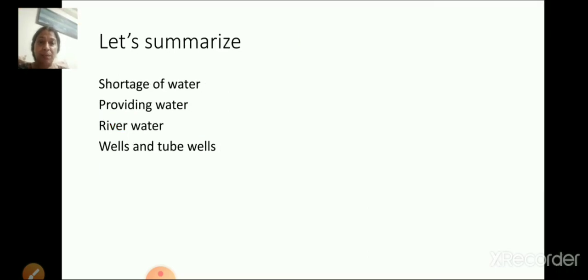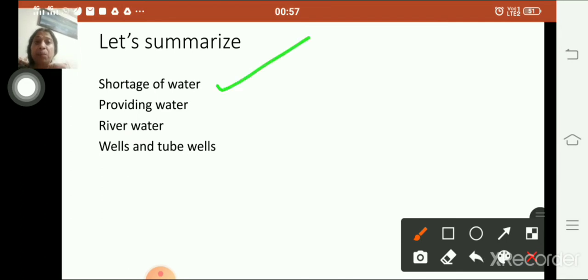So let's summarize what we have learnt today. Today, we have learnt shortage of water. So in spite of being surrounded by water, we have a shortage of water. Why? This is because the water in oceans and seas is salty and rain. Our main source of water is rain. It rains only for 2-3 months in India. Next is providing water.